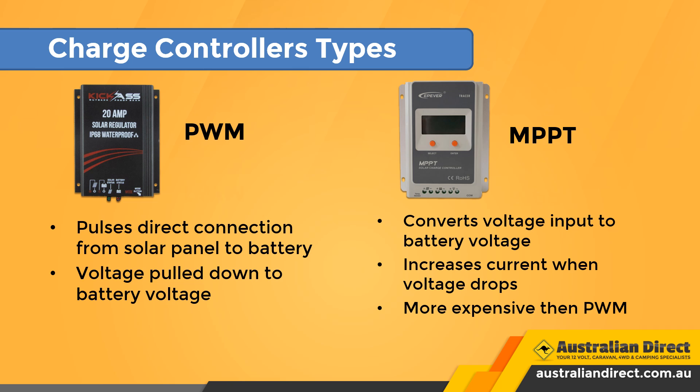PWM charge controllers operate by making a direct connection from the solar array to the battery bank. During bulk charging, when there is a continuous connection from the array to the battery bank, the array output voltage is pulled down to match the battery voltage. As the battery charges, the voltage of the battery rises, so the voltage output of the solar panel rises as well, using more of the solar power as it charges.